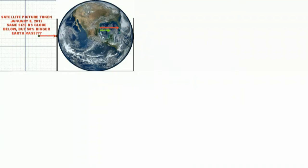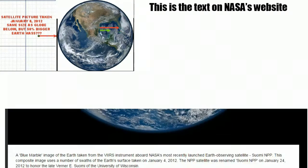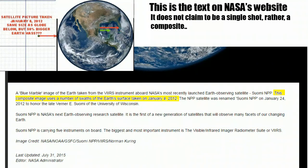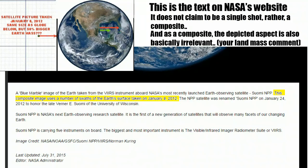However, here's the problem. He claims that NASA is claiming that this is a satellite picture taken on the 8th of January 2012. But claiming that this is a satellite picture, singular, or that NASA is even saying that it's a single satellite picture, is a lie. Not to mention you screwed the data up. This is the actual text that's listed on NASA's website. It does not claim to be a single shot. Rather, a composite. So nowhere in that is NASA claiming that it is a single shot of the earth from anywhere.